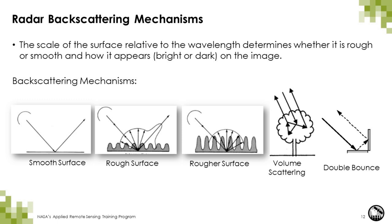The next scattering mechanism is a rough surface. When the surface height variations begin to approach the size of the wavelength, the surface appears rough and will scatter energy approximately equally in all directions — diffusely — with a portion backscattered to the radar. Surfaces with some level of roughness will have low backscatter, but not as low as a specular surface. The rougher the surface, the greater the energy scattered back to the satellite.